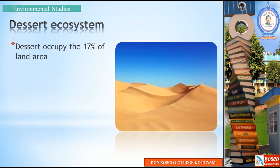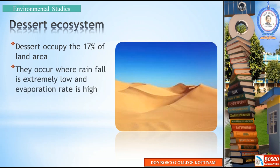If you consider the lithosphere, 17% of it is desert. Deserts occur where rainfall is extremely low and the evaporation rate is high.